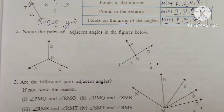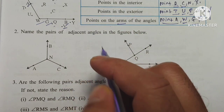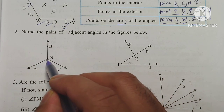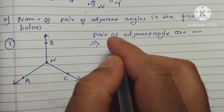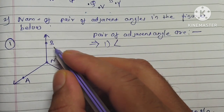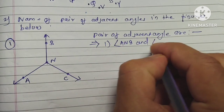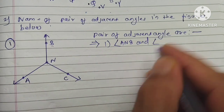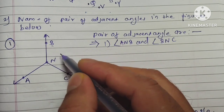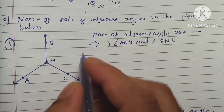The next question is to name the pairs of adjacent angles. Adjacent angles are two angles that have a common vertex. Here N is the vertex. The first pair is angle ANB and angle BNC. These two angles have a common vertex N and separate interiors.